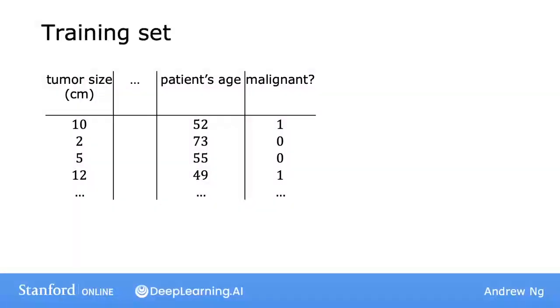Here's what the training set for a logistic regression model might look like, where here each row might correspond to a patient that was paying a visit to the doctor and wound up with some sort of diagnosis. As before, we'll use M to denote the number of training examples. Each training example has one or more features, such as the tumor size, the patient's age, and so on, for a total of N features. And so let's call the features x1 through xn.